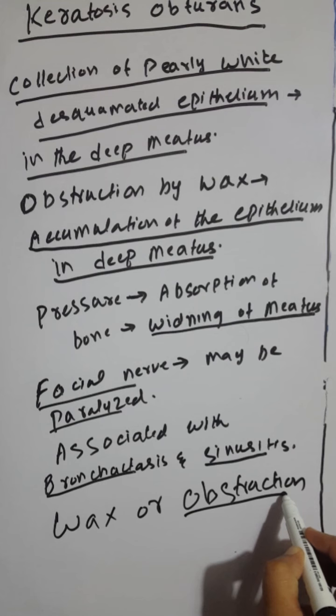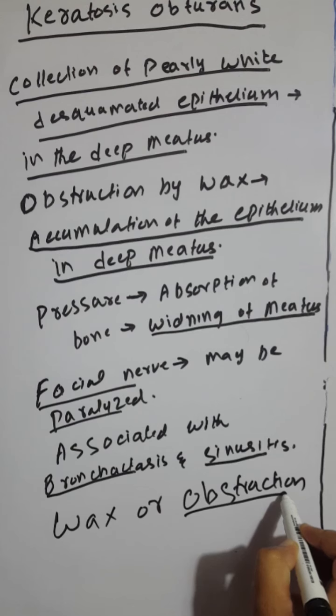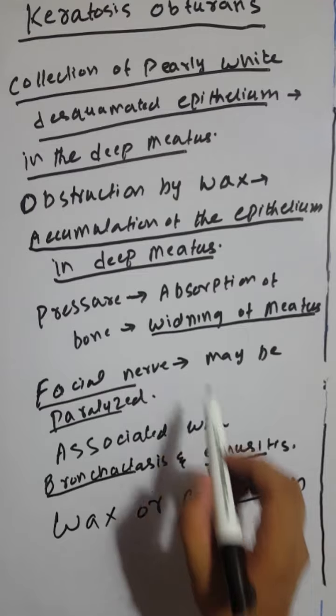Any obstruction also causes this condition and failure of epithelium from the surface of the tympanic membrane to migrate into the posterior meatal wall. This leads to accumulation of epithelial plug in the deep meatus, causing keratosis obturans.